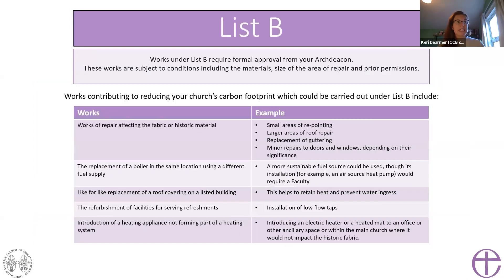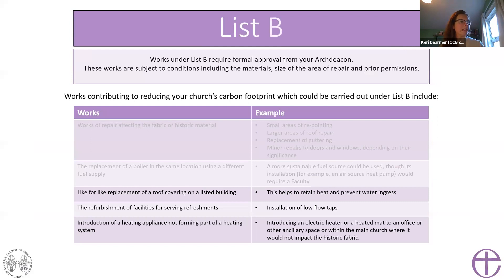List B requires approval from your archdeacon. You can replace a roof covering like-for-like on a listed building, which helps with maintenance, heat retention, and prevention of water ingress. You can refurbish facilities in existing refreshment areas — for example, installing a low-flow tap in your kitchen. You can also introduce a heating appliance as long as it doesn't form part of the overall heating system, such as an electric heater or heated mat in an office.